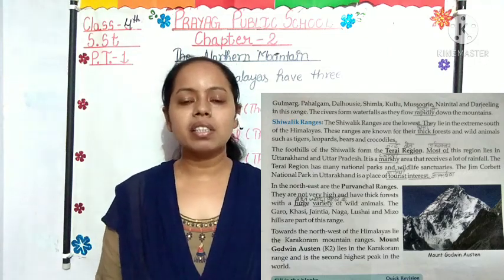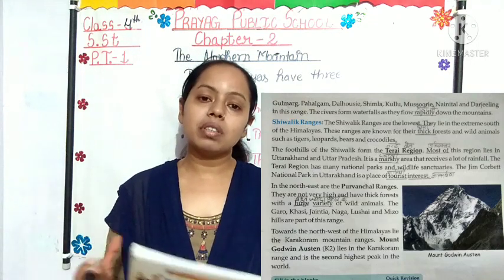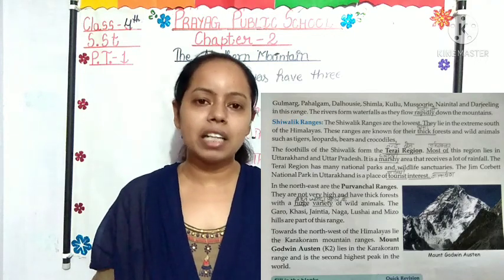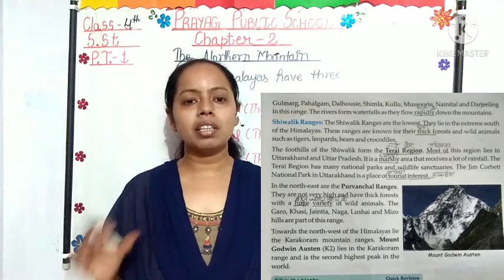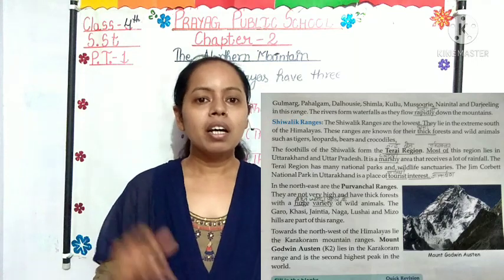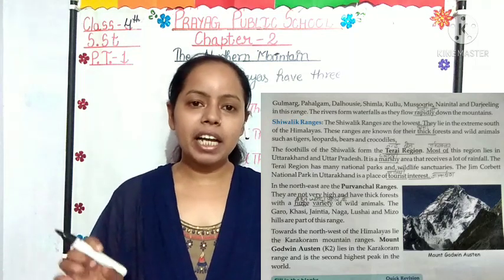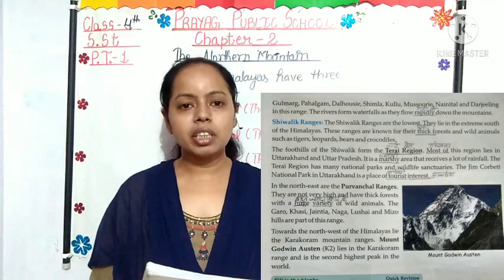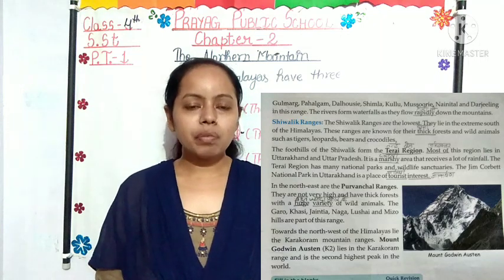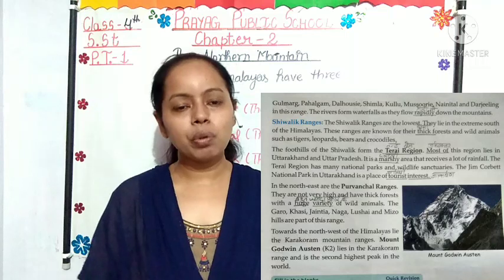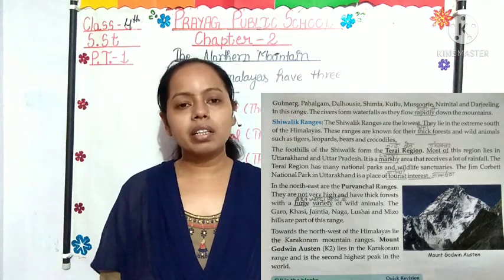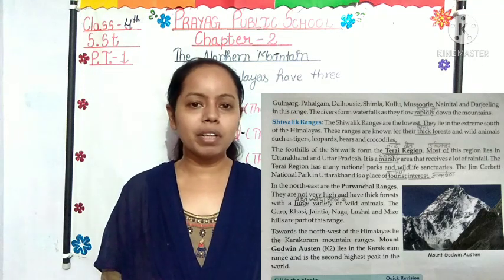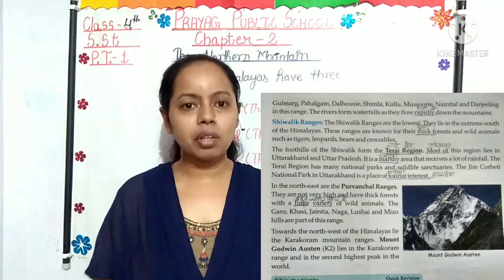After that, the lowest or lesser range is the Shivalik range, which is situated in the extreme south of the Himalaya. The Shivalik and its Terai region are known for dense forests and wild animals like tigers, leopards, crocodiles and bears. There are also many national parks and wildlife sanctuaries here. The Garo, Khasi, Jaintia and Naga hills are situated in the Purvanchal range. And in the northwest of the Himalaya lies the Karakoram range, containing K2 or Mount Godwin Austin, the second highest peak in the world.